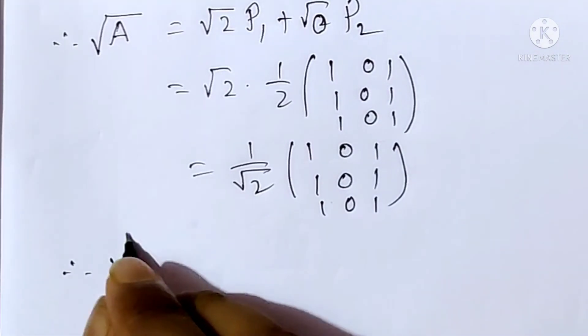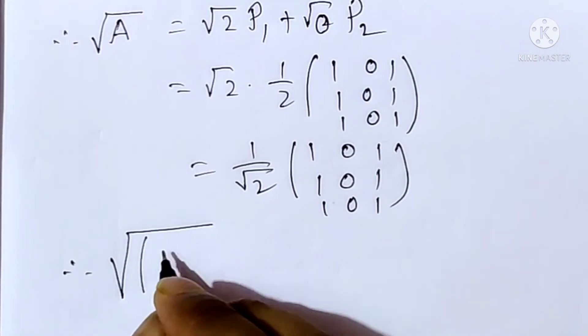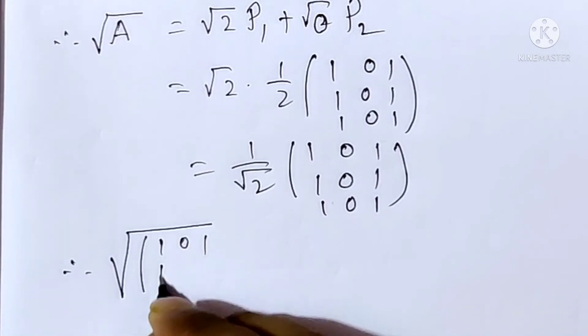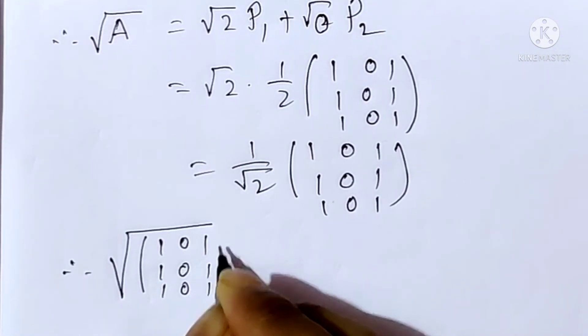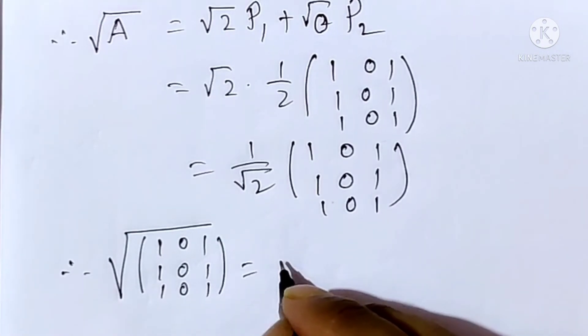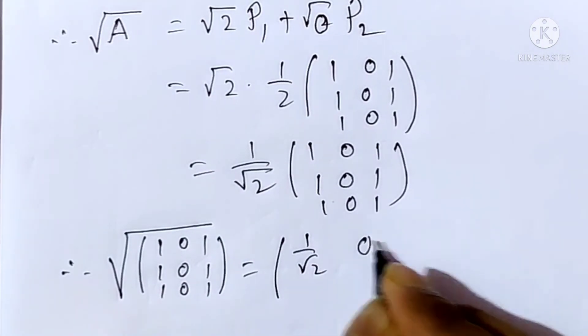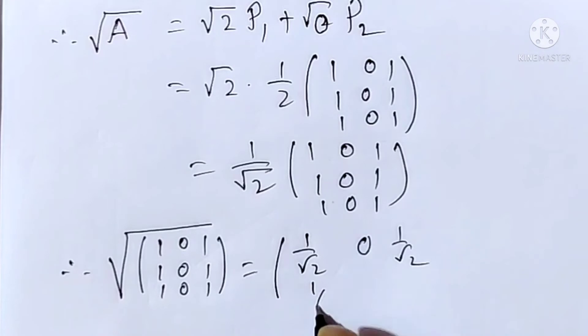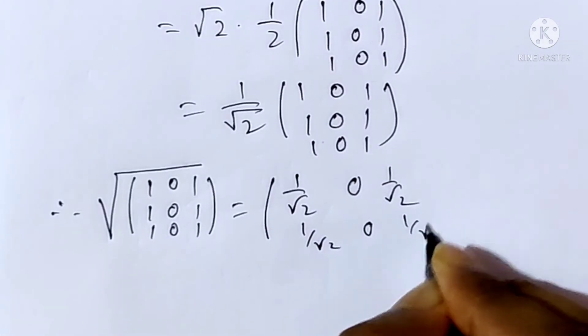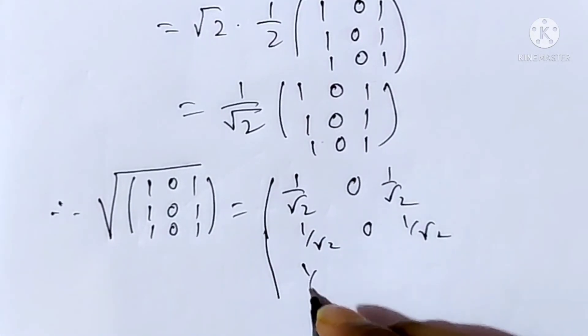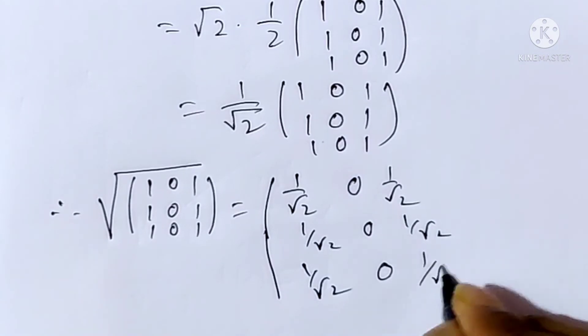Therefore, root of [1,0,1; 1,0,1; 1,0,1] equals [1/√2, 0, 1/√2; 1/√2, 0, 1/√2; 1/√2, 0, 1/√2].